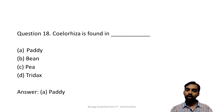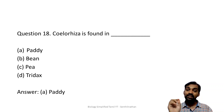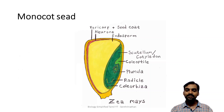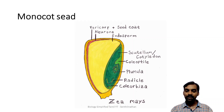Coleorrhiza is found in monocot plants. Coleorrhiza is a protective layer of the root found in monocots like paddy and rice. Coleorhiza protects the radicle; coleoptile protects the plumule. In monocot seeds, the embryo has a single cotyledon called scutellum, which is shield-shaped. The coleoptile and coleorrhiza are both present in monocot seeds.